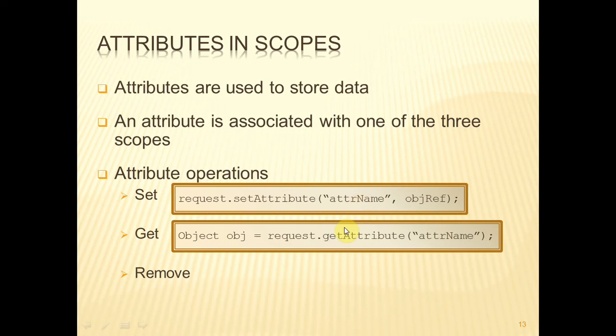Now the thing to bear in mind here is this object could be of absolutely any type. It could be a string, it could be an ArrayList, it could be one of our own JavaBeans. And therefore, because it could be of absolutely any type, getAttribute is simply going to return that reference as something of type Object,